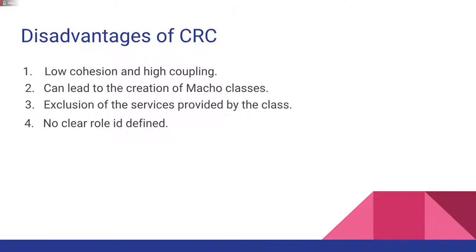The fourth disadvantage is that there is no clear role defined. The absence of the class role may lead to assigning wrong, useless or even missing responsibilities. Although the role seems fairly insignificant, it serves a very important purpose. If a class performs more than one role, it is possible that a generalization exists where each role is actually a subclass of some superclass.